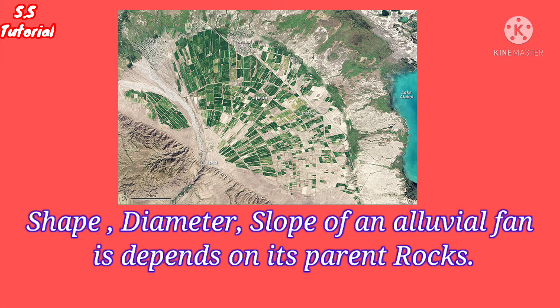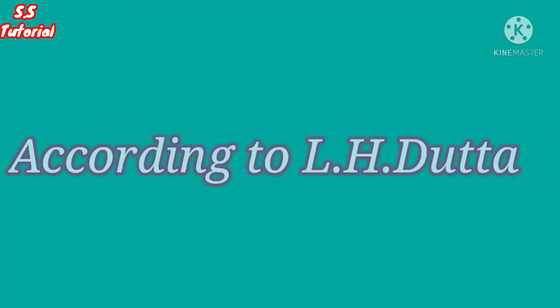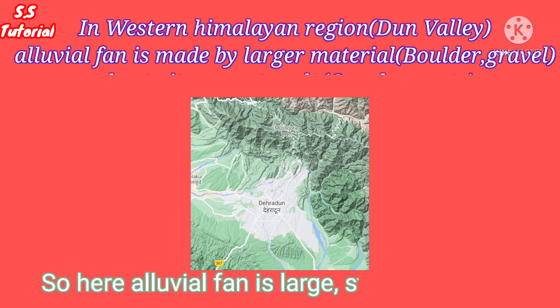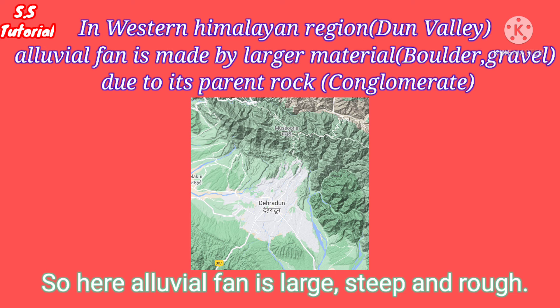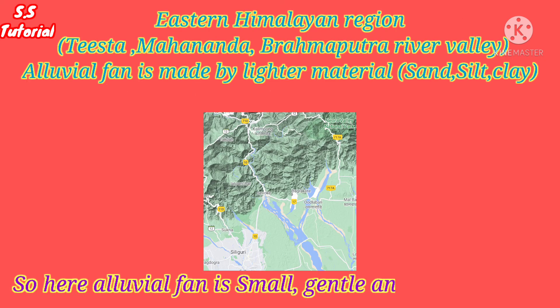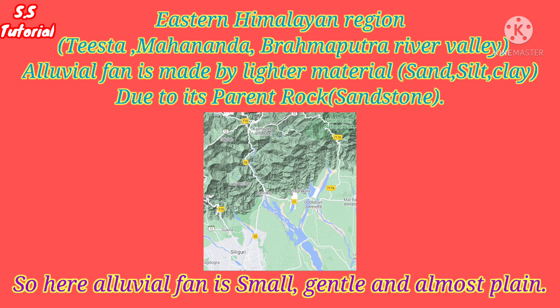Third, parent rocks. The shape, diameter, and slope of an alluvial plane or alluvial fan depends on and is controlled by its parent rocks. According to L.H. Dotto, in the Doon Valley of the Western Himalayan region, alluvial fans are made by boulders or gravel of conglomerate, so here alluvial fans are large, stiff, and rough. But alluvial fans developed by the Mohananda, Tishta, and Brahmaputra rivers in the Eastern Himalayan region are made by silt or fine material of rocks, so here alluvial fans are small, gentle, and almost plain.